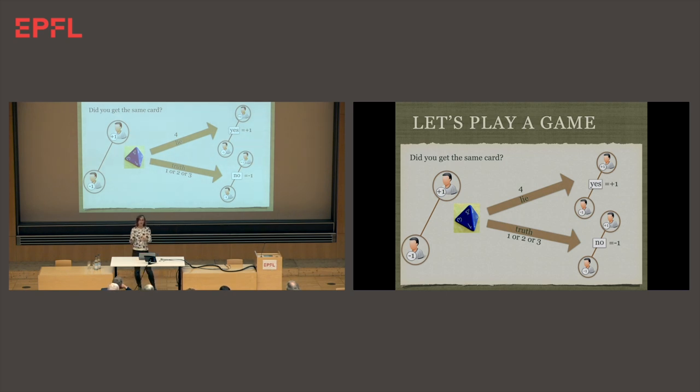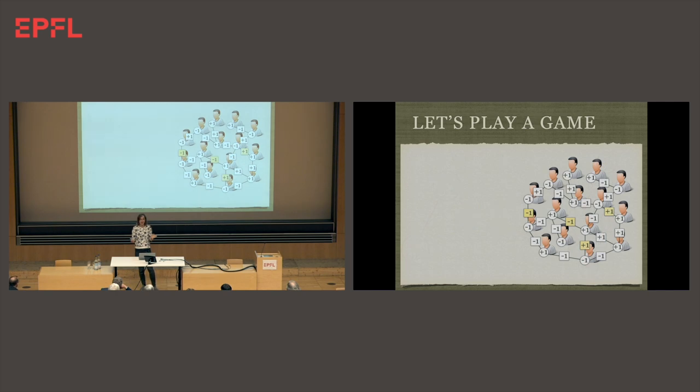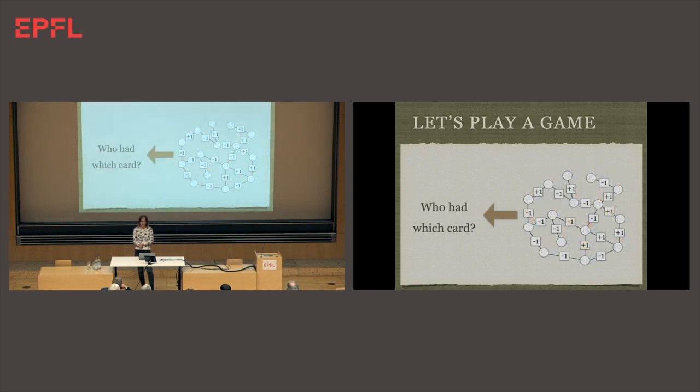They will roll the dice. If four falls, they will lie. In the other cases, they will tell the truth. I don't see what they roll on the dice, I don't see which cards they have, but I get the answer, either yes or no. Maybe they lied, maybe they didn't. I don't know. I take many pairs in the room and collect these answers. In this graph, the rounds are the cards that I'm trying to recover. The squares are the answers. When the square is yellow, it means they lied, those are the pairs that rolled four. But I don't observe this. All I observe are the answers without the colors.